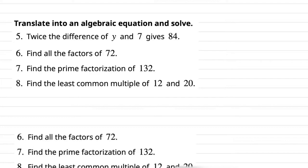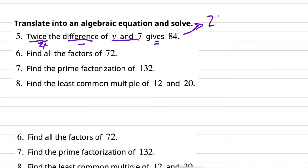Number five: translate into an algebraic equation and solve. "Twice the difference" — twice means two times, difference means subtraction — "of y and 7" — those are the two terms being subtracted — "gives 84" means equals 84. So: twice the difference of y and 7 gives 84. That translates to 2 times (y minus 7) equals 84.